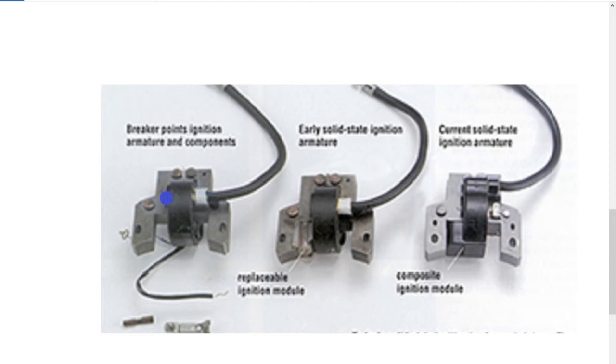The problem is that because it's north and south poles it generates an AC voltage. So if this was just shorted to ground with no points, we'd have an AC circuit swinging backwards and forwards through the coil. We don't want that, so what we do is we have a set of points.